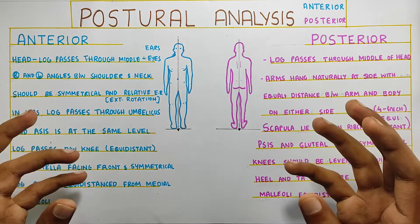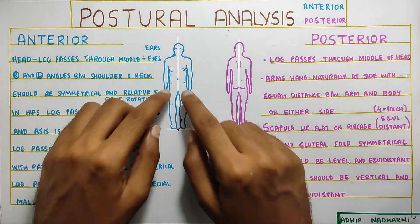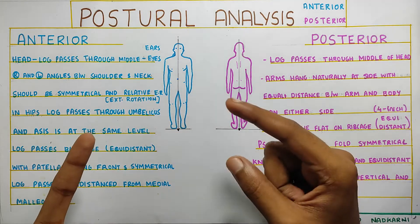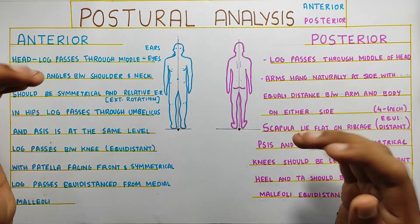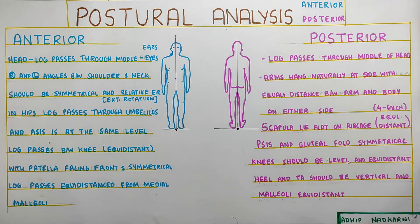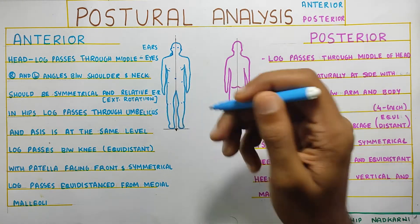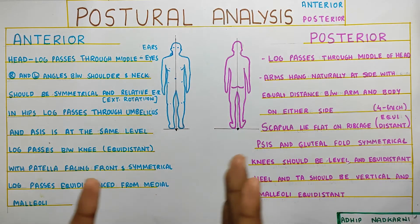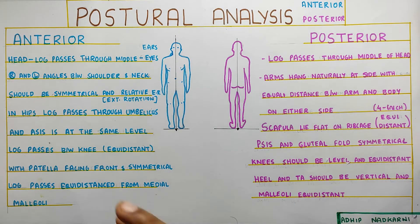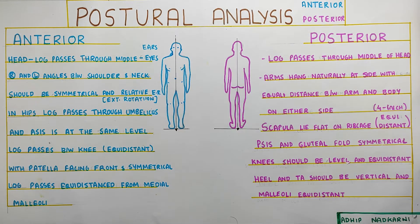Pelvis being at the same level is a very important point to always check — it can tell you about leg length discrepancy. If the person has had a fracture in the past, that can create a leg length discrepancy and put the pelvis in a slightly tilted position. Further down, the line of gravity will pass between both knees, which will be equidistant, and the patella will be facing exactly front. The medial malleoli will again be equally distant from the line of gravity.